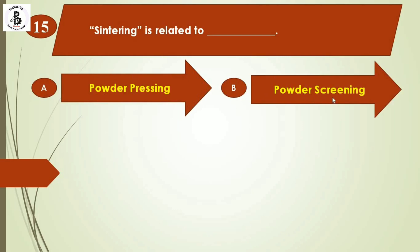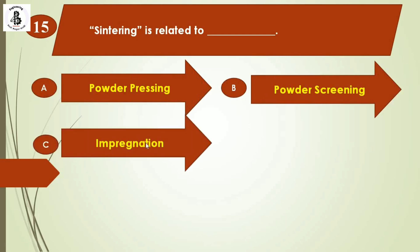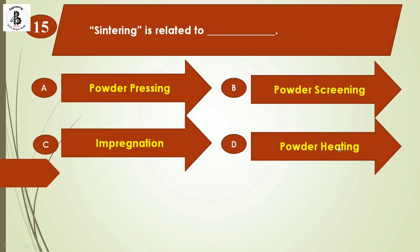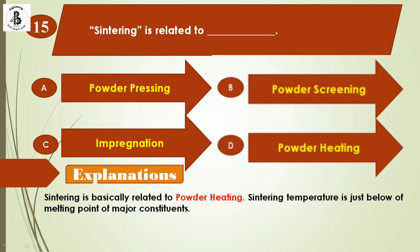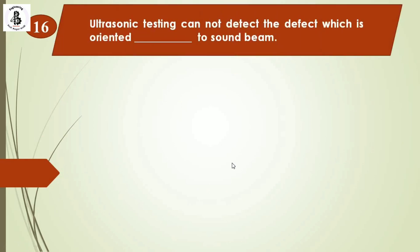Next question: Sintering is related to — option A: powder pressing; option B: powder screening; option C: impregnation; option D: powder heating. Sintering is basically related to a powder heating process. With the help of sintering, the material is heated just below the melting point of the major constituent. The right answer is option D, powder heating.